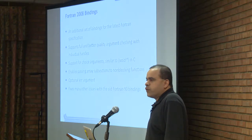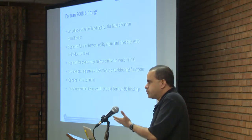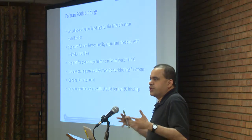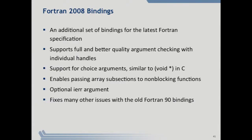There are new bindings for Fortran 2008, the new version of Fortran. These provide better quality argument checking — for example, an MPI data type was an integer in the previous Fortran, but here it is something specific that the compiler can check if you pass the wrong argument, similar to C. A whole bunch of other features make the Fortran version more modern.